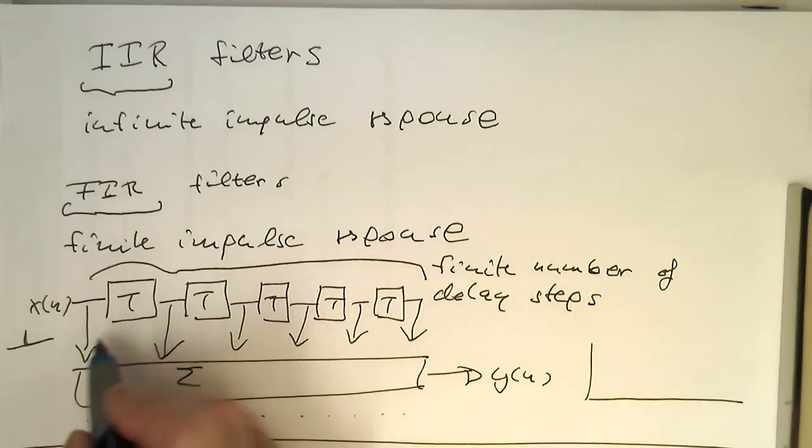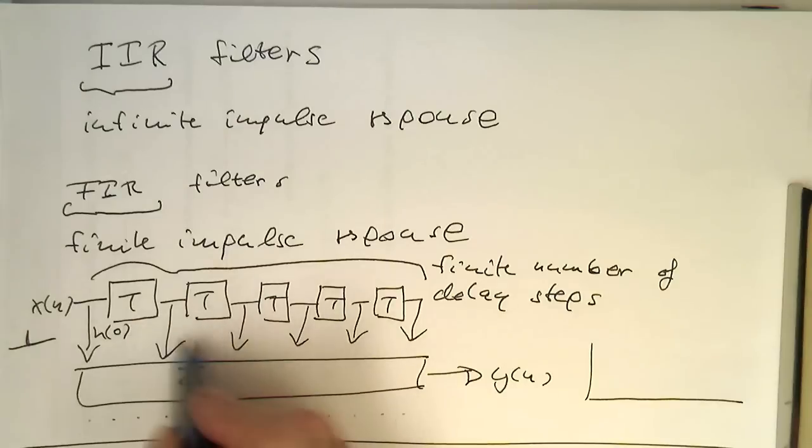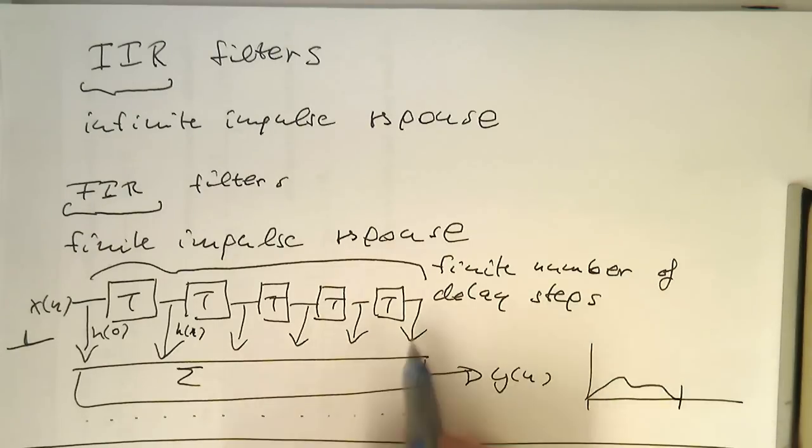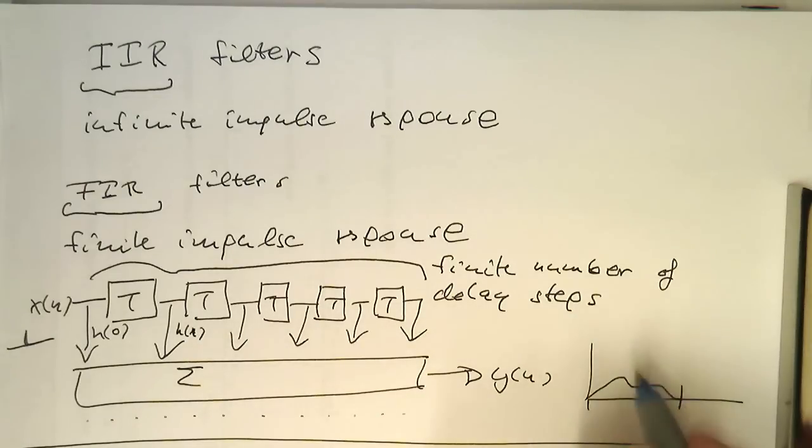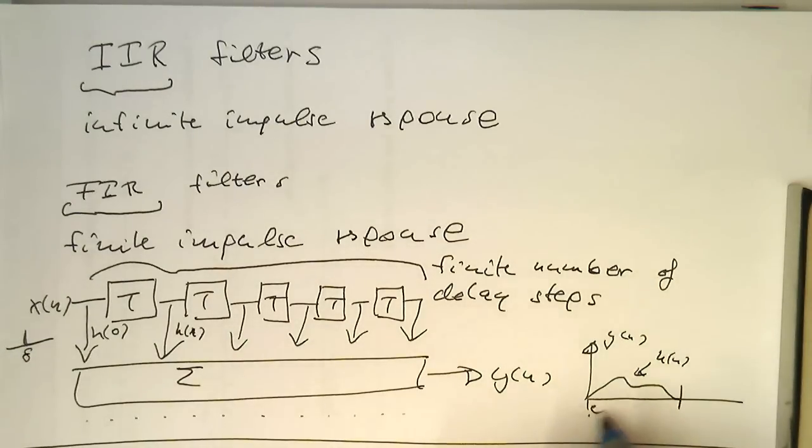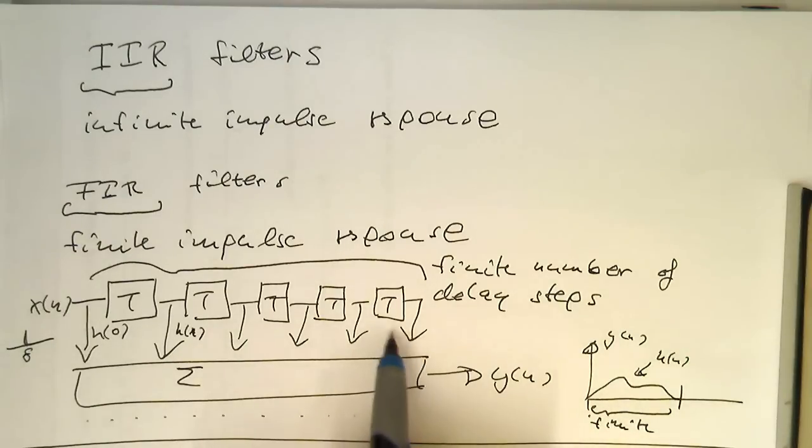Depending on the H of N here, or impulse response, we're getting a certain impulse response, but this impulse response stops after it has traveled through all these delay steps. The impulse response generated here by Y of N—if this is a delta here, that's our H of N—then this is finite, finite because we have just a finite number of delay steps.